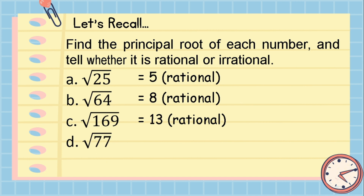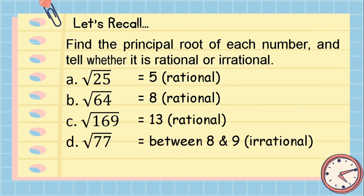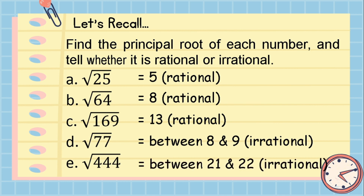Letter D: 77 is not a perfect square, so the principal root of square root of 77 is between 8 and 9. Using a calculator, the answer is 8.774964... and so on, which is irrational. Letter E: 444 is also not a perfect square, so the principal root of square root of 444 is between 21 and 22. Using a calculator, the answer is 21.071307... and so on, which is irrational.